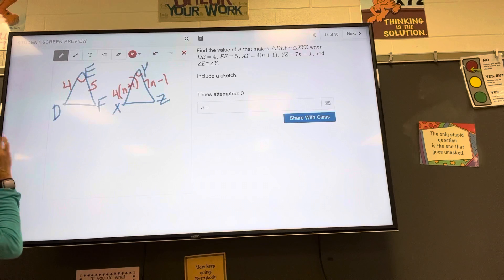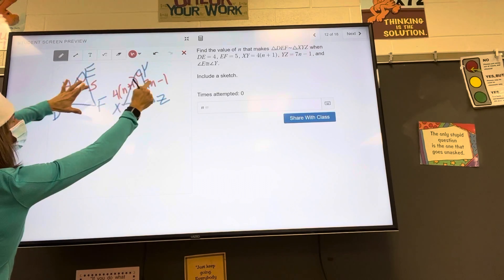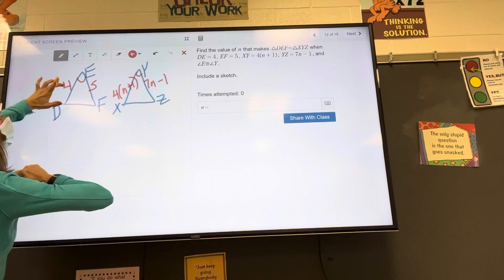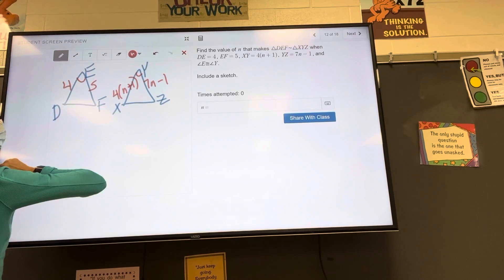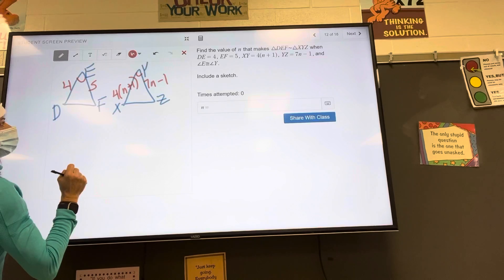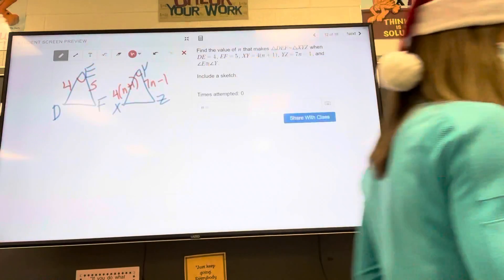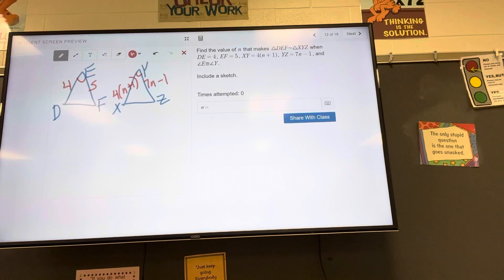If we know that these two angles are congruent, we're told that if these two corresponding sets of sides are proportional, if I set 4 over 4(n+1) equal to 5 over 7n-1 and then solve for n, we should make it proportional. Let's do it.